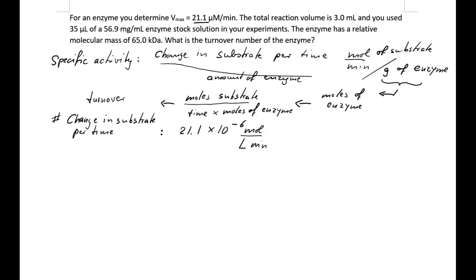Our reaction is not in a liter — we only have a 3 milliliter reaction. So we calculate the number of moles changed in our reaction by multiplying by 3 × 10⁻³ liters. The liter cancels out, and our change in substrate per time is 21.1 × 10⁻⁶ × 3 × 10⁻³ moles per minute. I leave it in this form to avoid rounding errors.